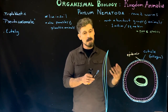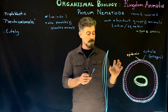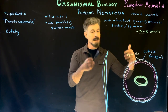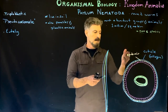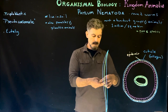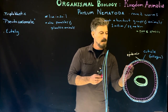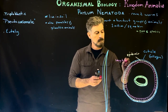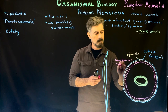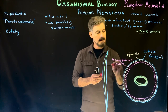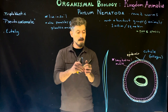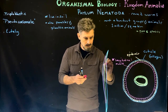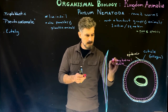The nematodes have this cuticle that protects them from the environment and also against their own internal pressure, which we'll get into as we talk about this cavity. It's a secreted outer layer that can be shed as the animal grows. There's an epidermis, and then beneath that there's a muscular layer, and this is longitudinal muscle.